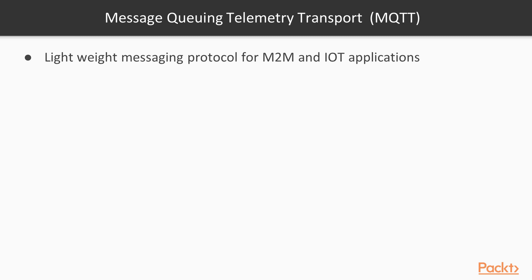Message Queuing Telemetry Transport, or MQTT in short, is a lightweight messaging transport protocol for machine-to-machine and Internet of Things communication. It is very bandwidth efficient, using only 2 bytes of overhead. It provides one-to-one, one-to-many, and many-to-many data streaming scenarios for devices and applications.